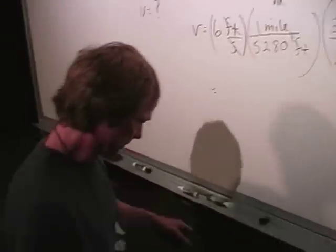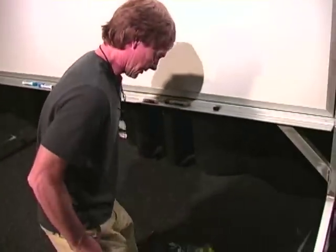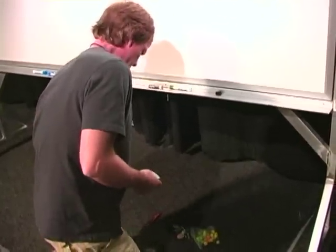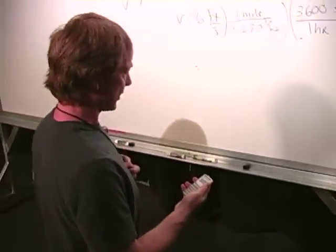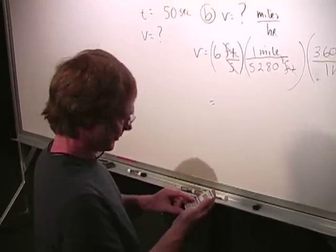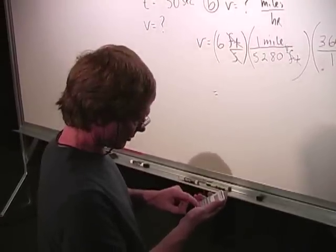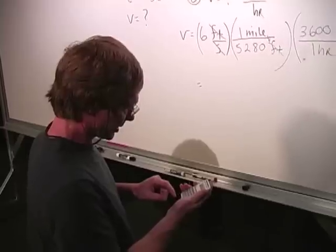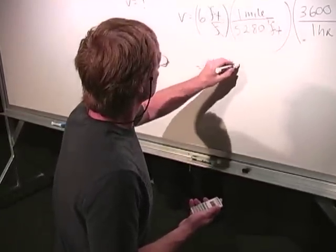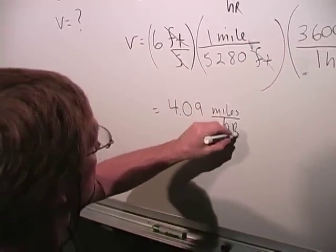I've just got to calculate it. I've got 6 divided by 5,280 times 3,600 gives me 4.09 miles per hour.